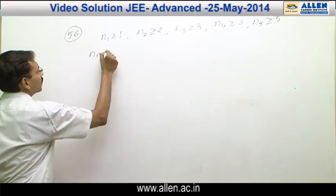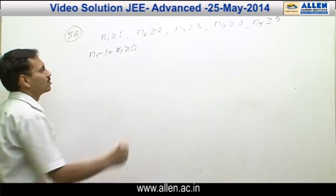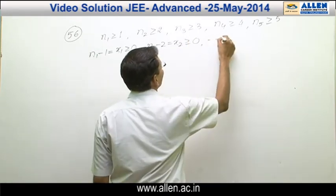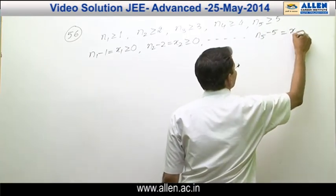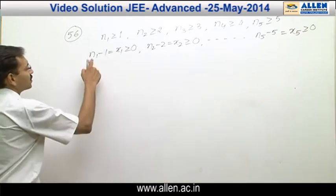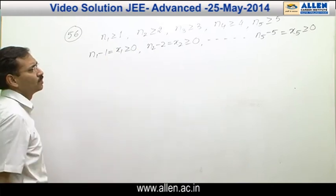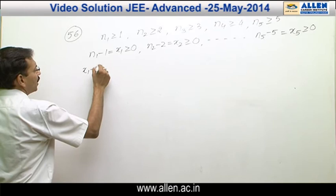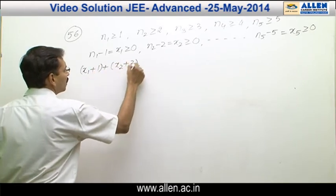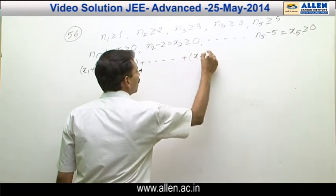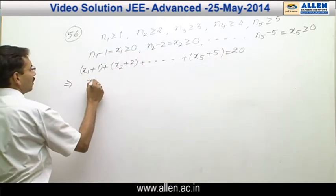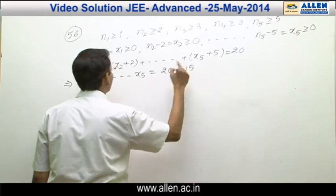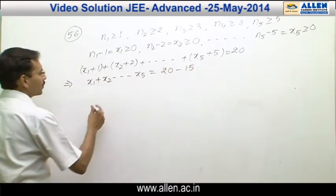Now if we assume n1 minus 1 as x1, then x1 is greater than or equal to 0. Similarly, n2 minus 2 is x2, and so on up to n5 minus 5 equals x5, all greater than or equal to 0. This gives n1 equals x1 plus 1, n2 equals x2 plus 2, up to n5 equals x5 plus 5. Since the sum of the n's is 20, the new equation becomes x1 plus x2 plus x3 plus x4 plus x5 equals 20 minus 15, which is 5.